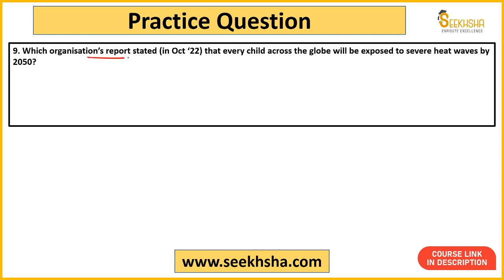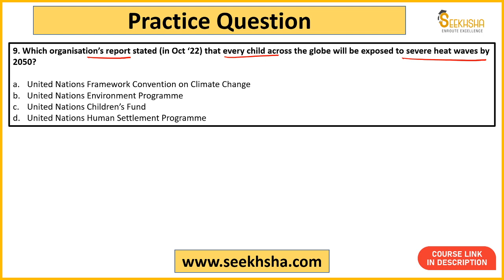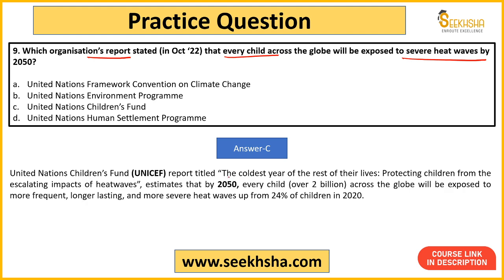Next question: which organization's report stated that every child across the globe will be exposed to severe heat waves by 2050? Options include UNFCCC, UNEP, UNICEF, and UN-Habitat. The correct answer is option C — UNICEF. The report was titled 'The Coldest Year of the Rest of Their Lives: Protecting Children from the Escalating Impact of Heat Waves.' By 2050, every child — around 2 billion across the globe — will be exposed to frequent, long-lasting, and more severe heat waves, 24% more than in 2020.